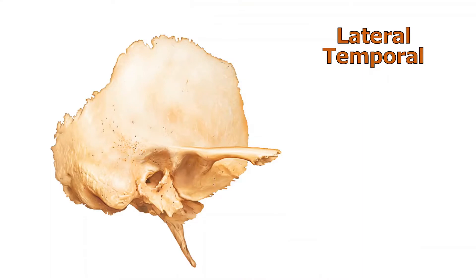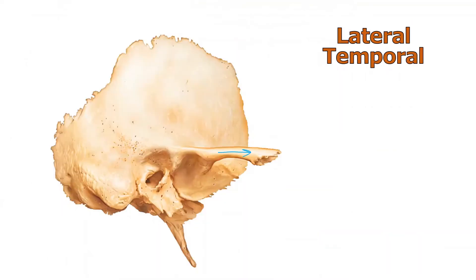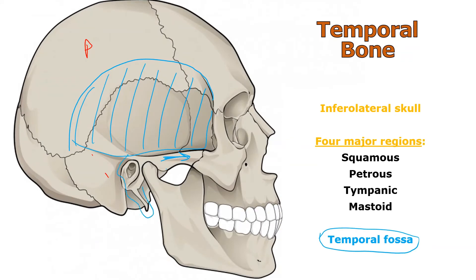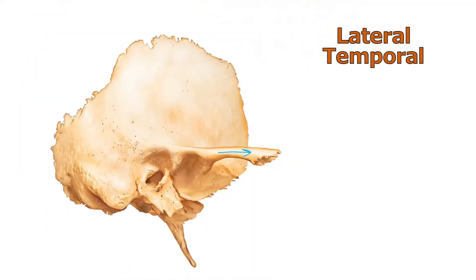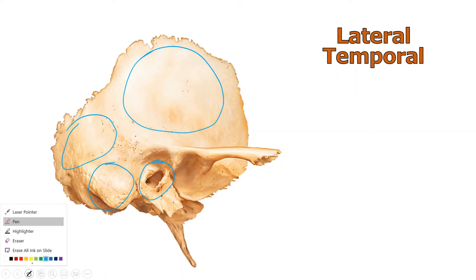Here we've pulled the temporal bone out. There's that pokey thing sticking out, the ear hole of the tympanic region, and that pokey thing hanging down. It looks different once you take it out of position, but you can still identify the squamous region, the petrous region, the mastoid region, and the tympanic region.